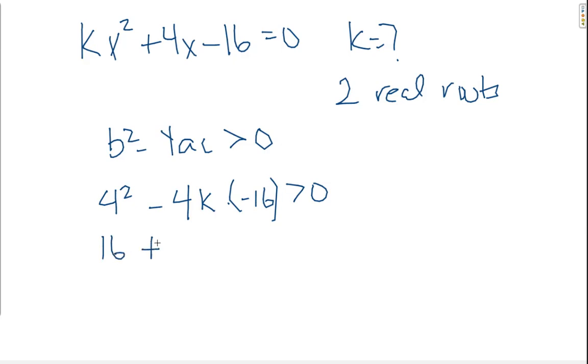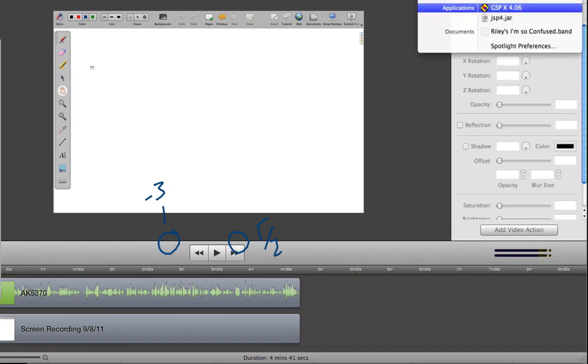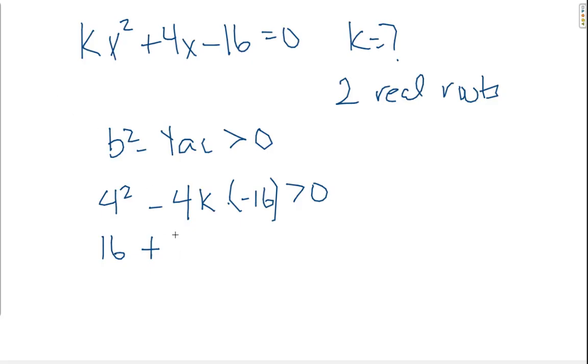16 plus - oh, 4 times 16. Help me out here, computer. 4 times 16 is 64. Just double checking. It's 64k, bigger than zero.